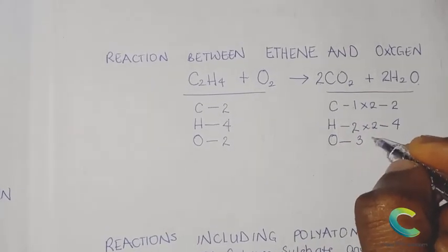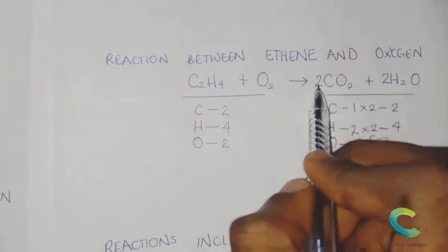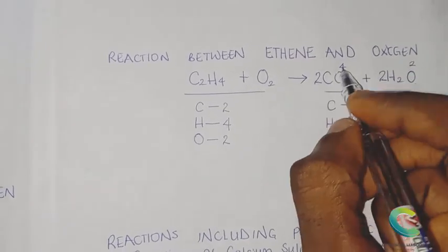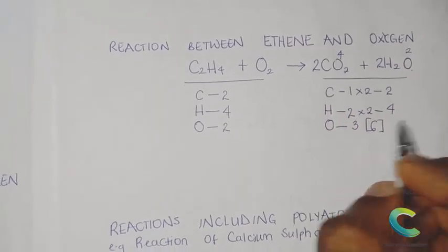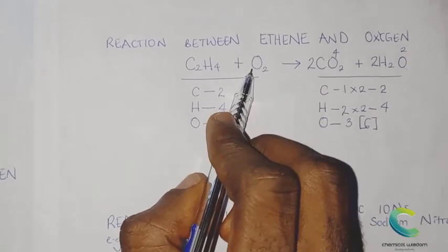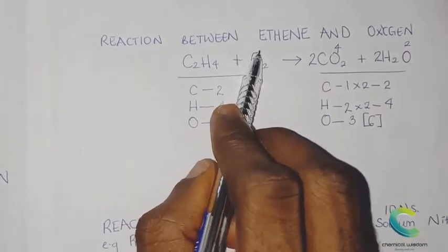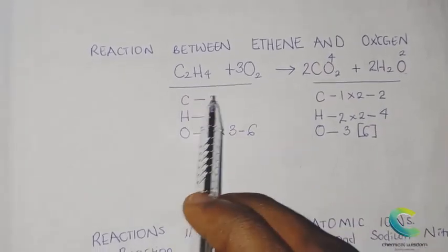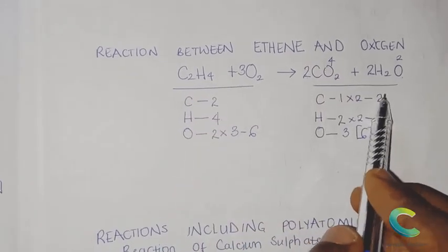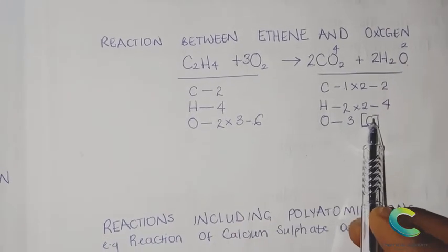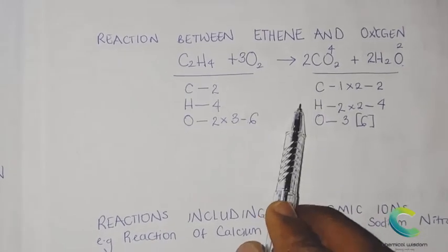The oxygen now becomes two times two (from CO₂) giving four, plus two times one (from H₂O) giving two — so four plus two equals six oxygen atoms on the right, but only two on the left. To convert the O₂ on the left to six atoms, introduce a coefficient of three: three times two gives six. Now the equation is fully balanced — two carbon on both sides, four hydrogen on both sides, and six oxygen on both sides.